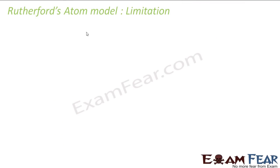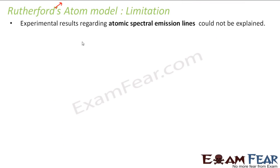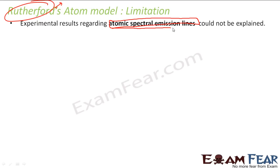As I told, the Rutherford atom model was not the perfect one — it had limitations. Once Rutherford gave this model, scientists observed atomic spectral emission lines. I'll tell you what that is in the next slide. They observed these atomic spectral emission lines and Rutherford didn't have any answer for how these lines came.